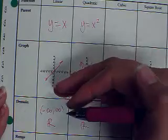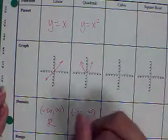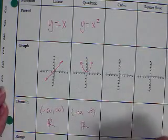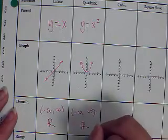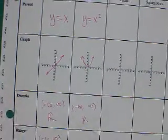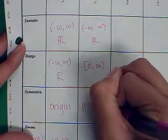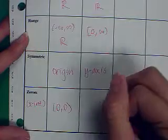The range, as we come up from the bottom, there's nothing happening until we get to 0. So you've got 0, and 0 is included, all the way to infinity. The symmetry is with respect to the y-axis. And the zero is at 0, 0.